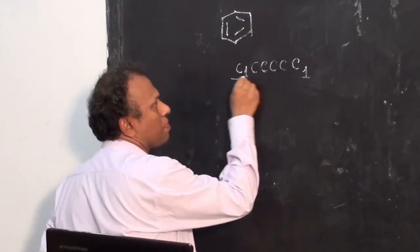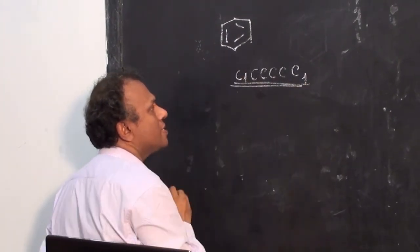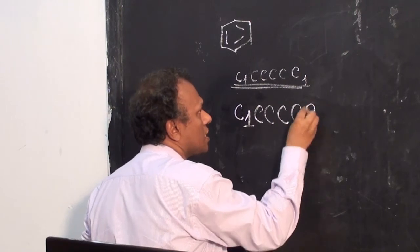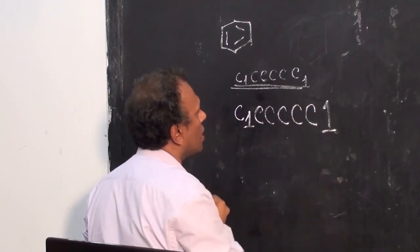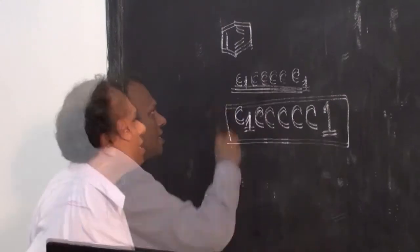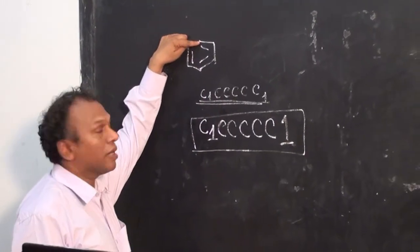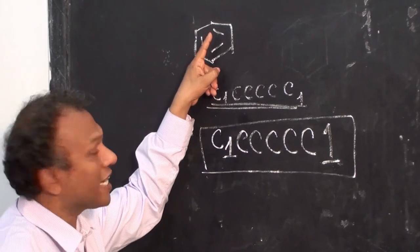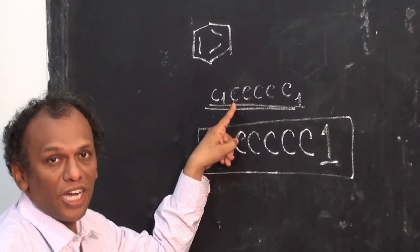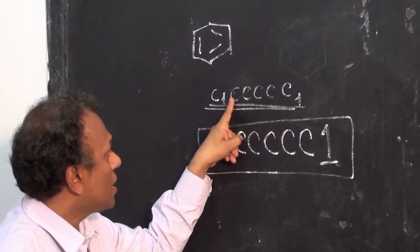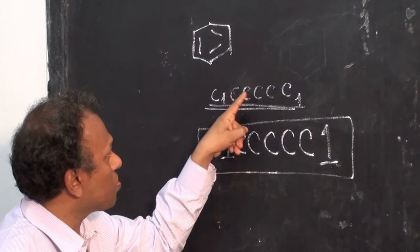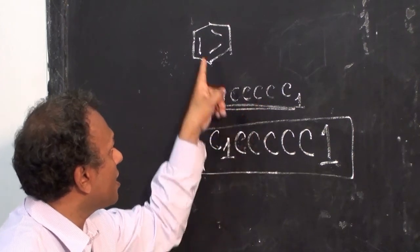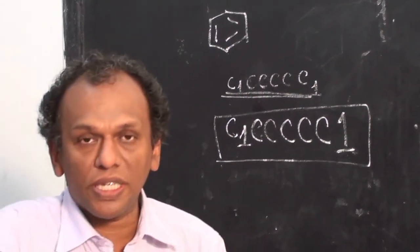Aromatic carbons are usually represented by small letters. Instead of writing C1, C, C, C, C, C, C1, you use lowercase c to represent aromatic carbons. Aromatic compounds always contain double bonds, but any special representation is not required because it is implicit — when you are using small letters, that indicates aromaticity is present in the system.